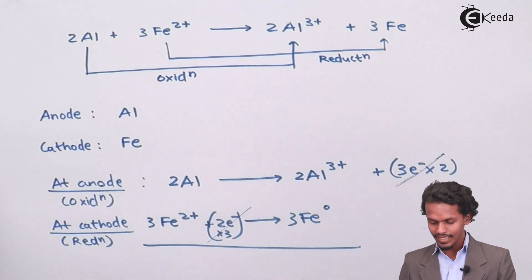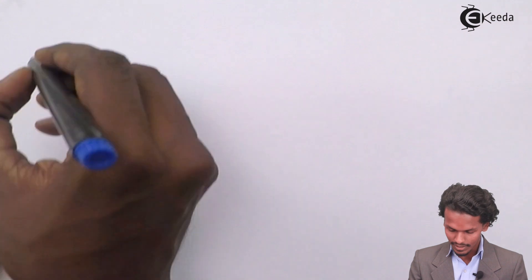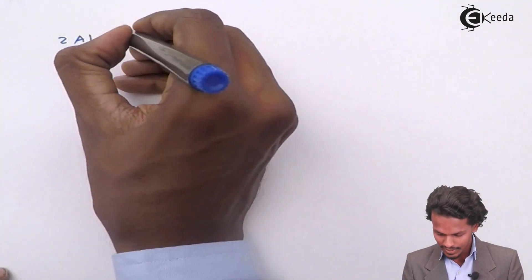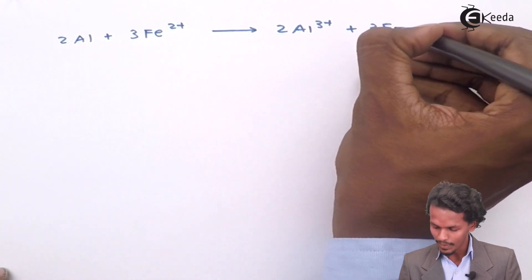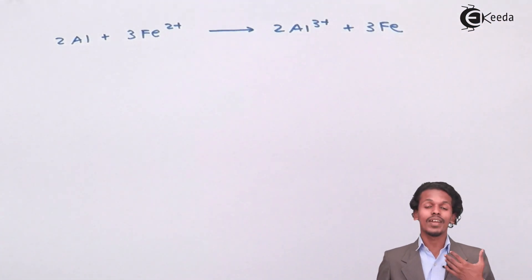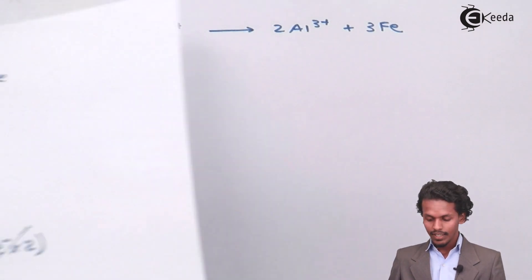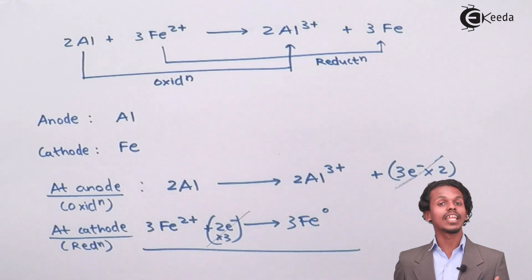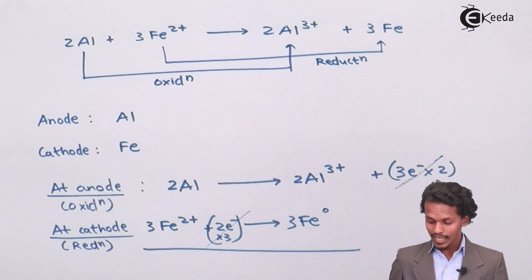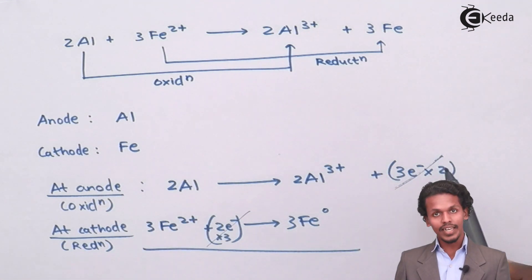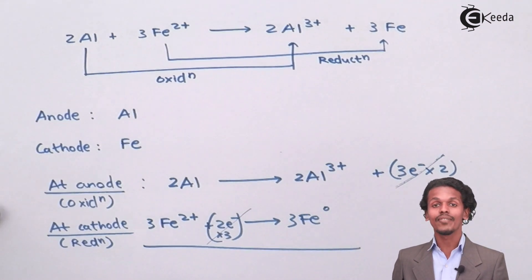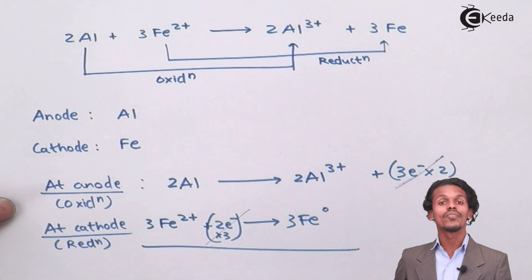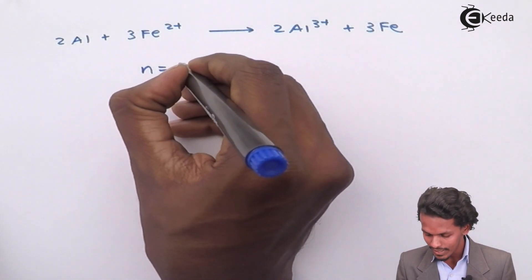The 6 electrons on both sides cancel out, and the overall reaction we get is 2 moles of Al plus 3 moles of Fe²⁺ giving 2 moles of Al³⁺ plus 3 moles of Fe — which is already balanced. This also tells us the value of n, the number of electrons involved in the half-reactions, which is 6.